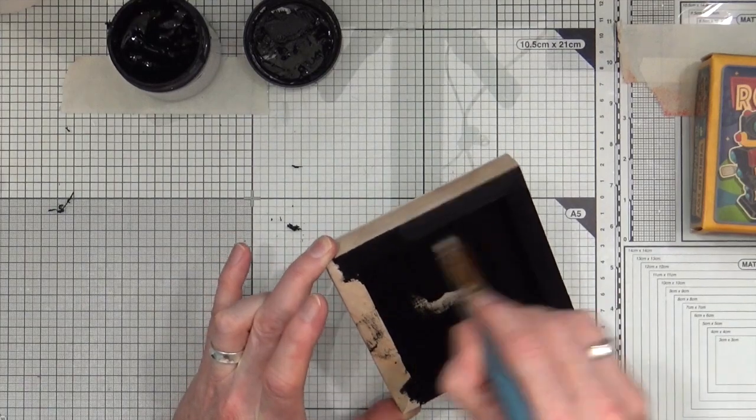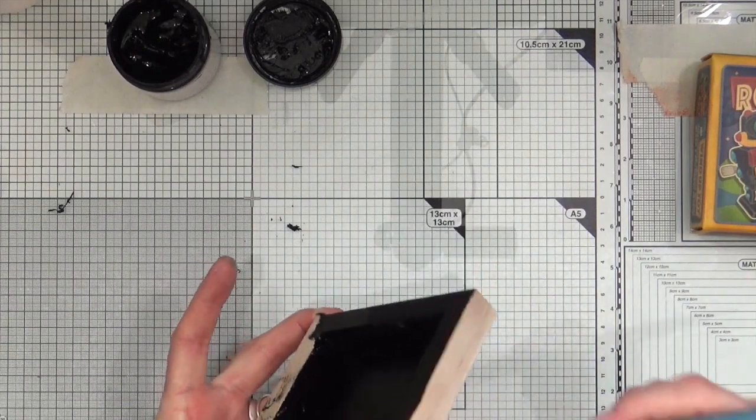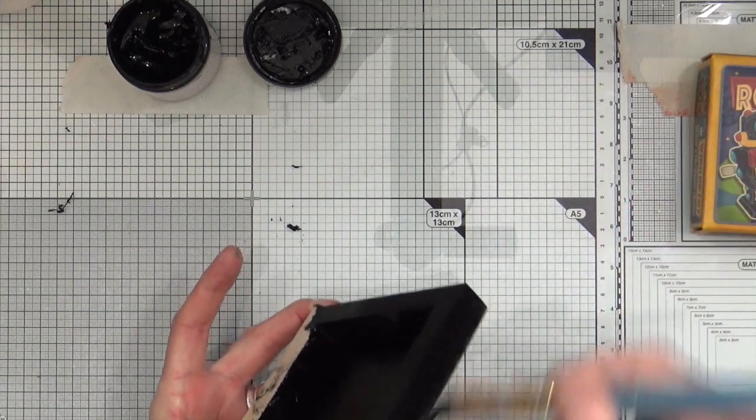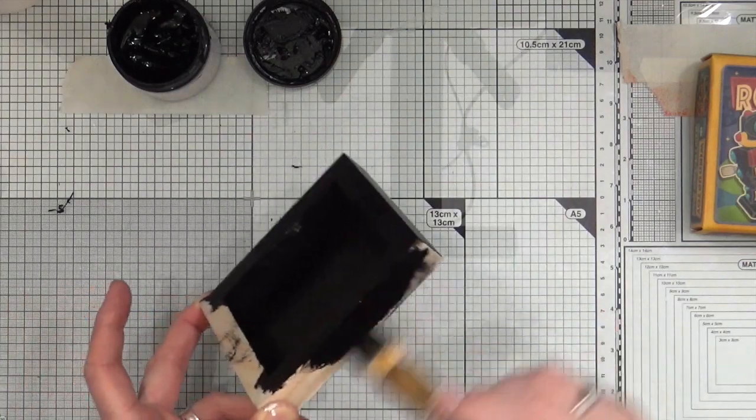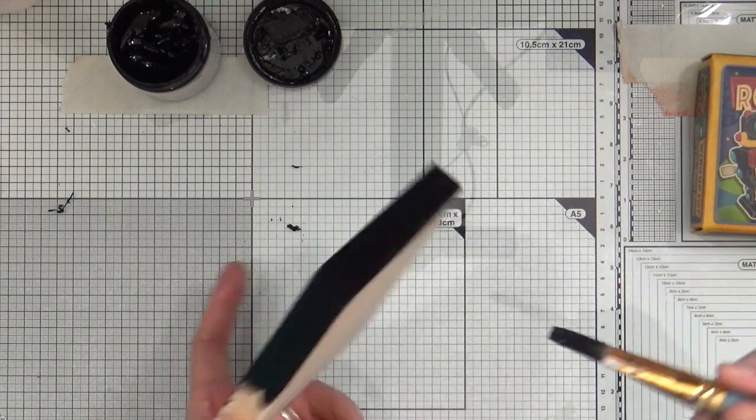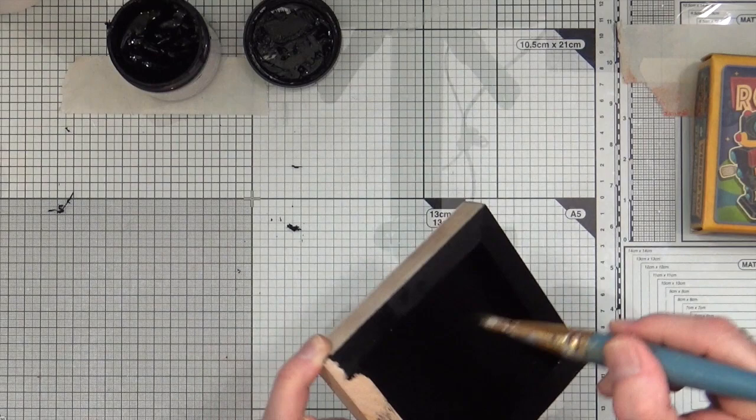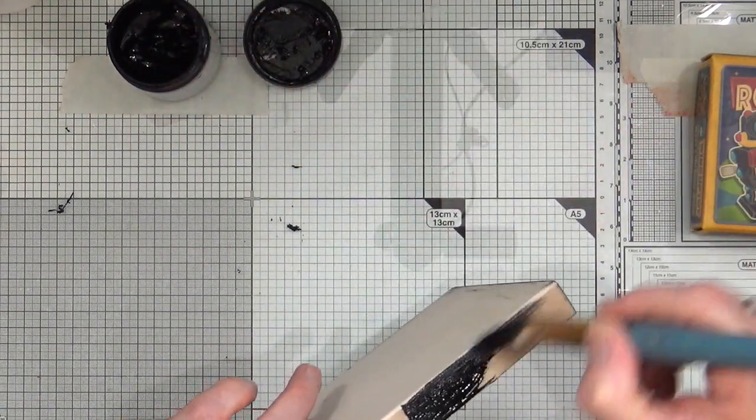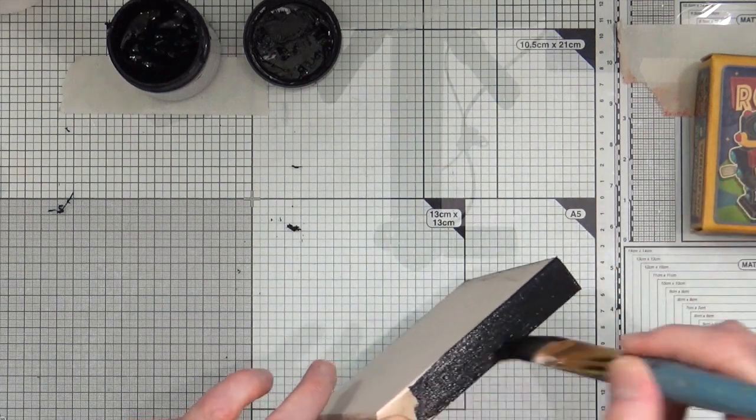So literally just give it one coat of black gesso. This Dina Wakeley stuff will not need more than one coat because it's absolutely super duper perfect black gesso. Normally I find that even when painting onto plastic, I don't need two coats. One is sufficient, but if you want to add two, you do what you feel is right for your project.